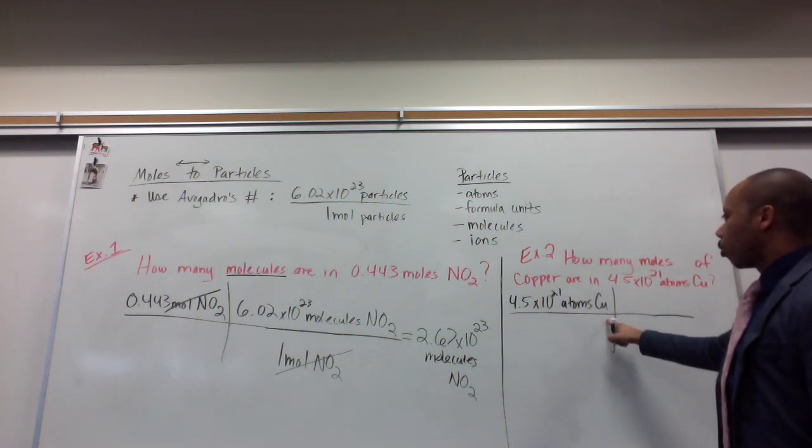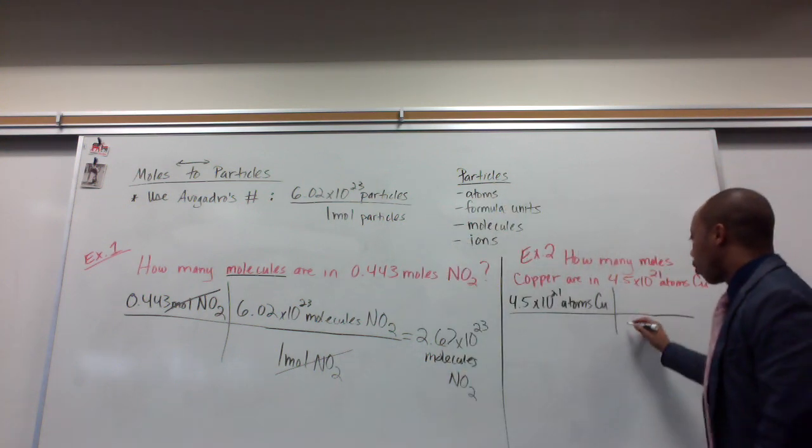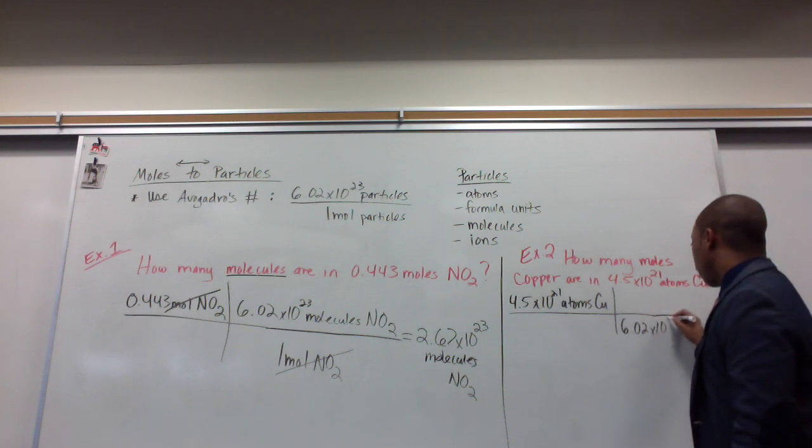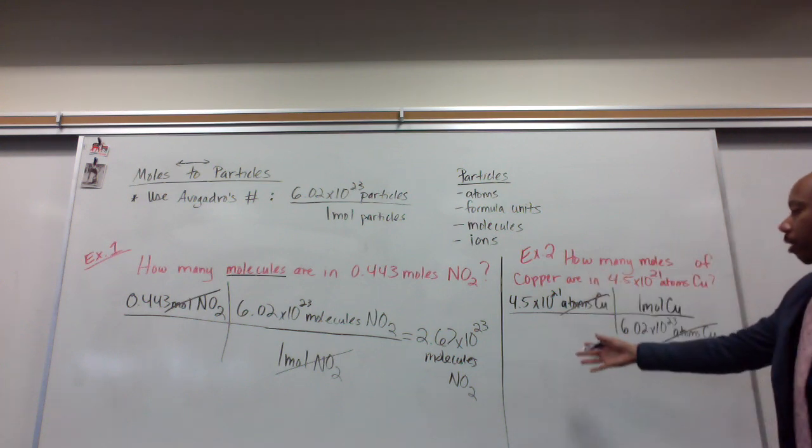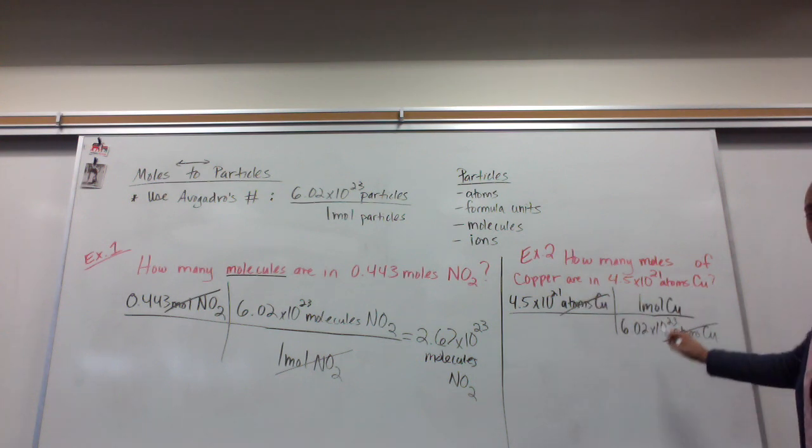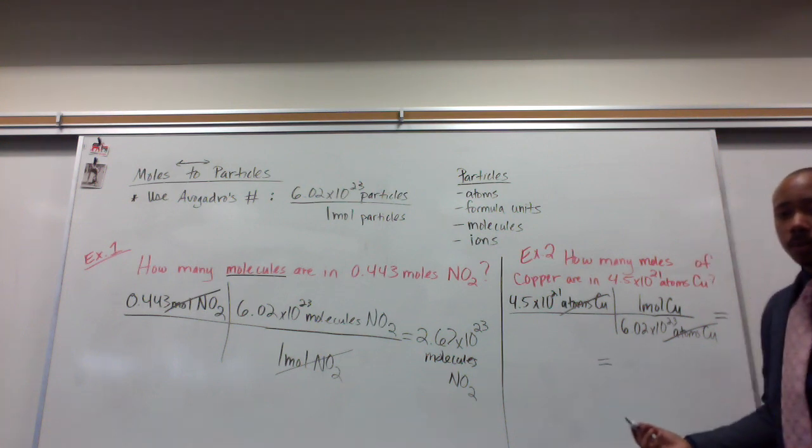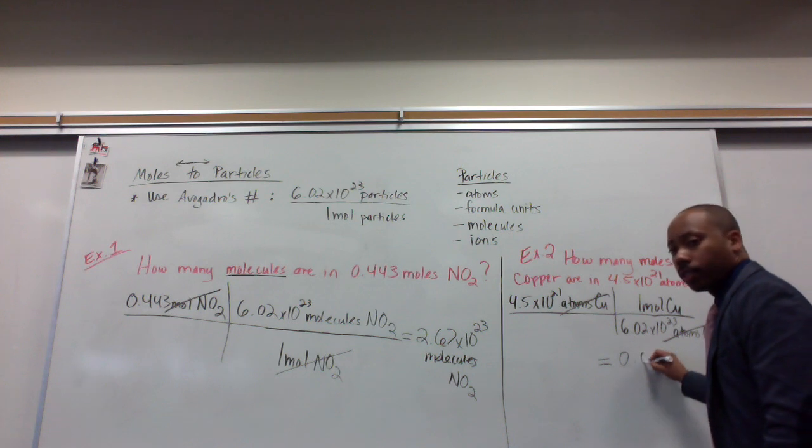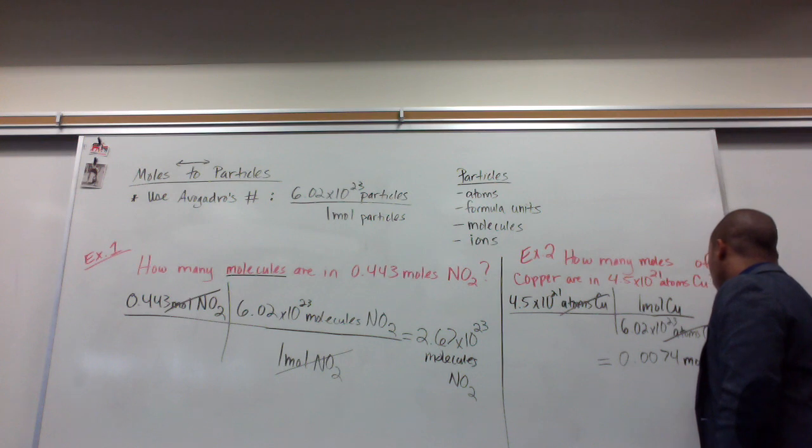I want to get rid of atoms of copper. So, again, atoms is a particle. Particles always goes with Avogadro's number. Therefore, on the bottom we put Avogadro's number. 6.02 times 10 to the 23rd atoms of copper for every one mole of copper that we have. Atoms of copper cancels. I'm simply left with multiplication. I'm sorry. Division. 4.5 times 10 to the 21st times one mole divided by Avogadro's number equals, and I write it down here, a much smaller number.